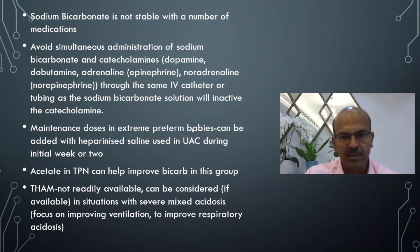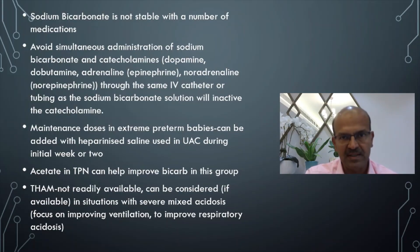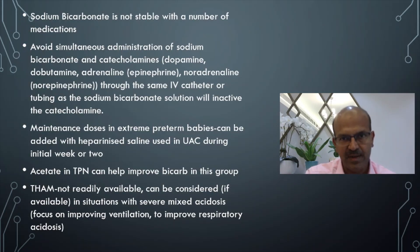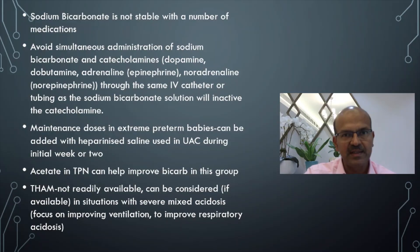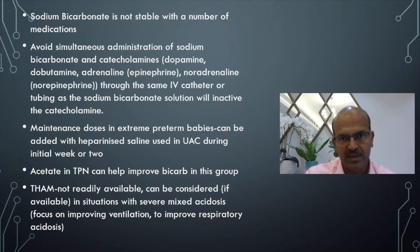In extreme preterm babies with urinary loss of bicarbonate, the pH tends to be in the 7.2–7.25 range with base excess minus 6 to minus 10. If lactate is normal and the baby is otherwise well, you can monitor or give a dose of bicarbonate if other factors are present — orally if on full feeds, or via the umbilical arterial catheter, as heparin is stable with bicarbonate. We use this in extreme premature babies in the first one to two weeks depending on the blood gas picture. Acetate in TPN is converted to bicarbonate in the liver and increasing it may help correct this metabolic acidosis.